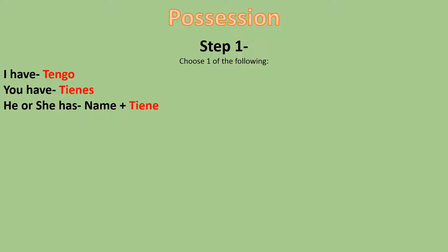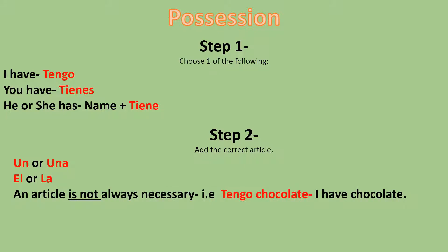For example, Carlos tiene means Carlos has. Step two: add the correct article. Un or una mean 'a', and el or la mean 'the'. An article is not always necessary. For example, tengo chocolate means I have chocolate. It doesn't necessarily have to be tengo un chocolate, meaning I have a chocolate.